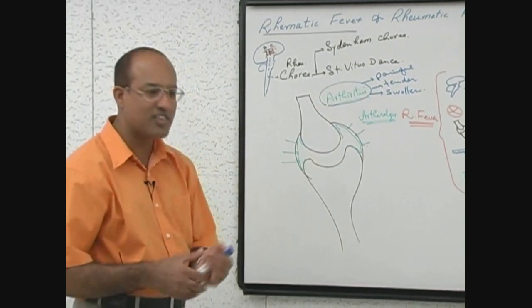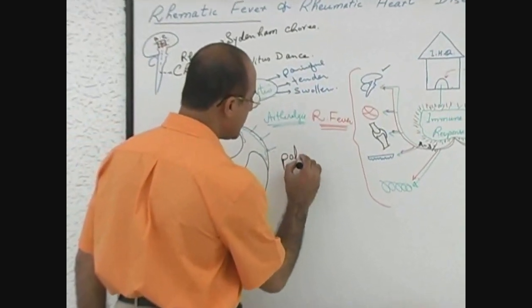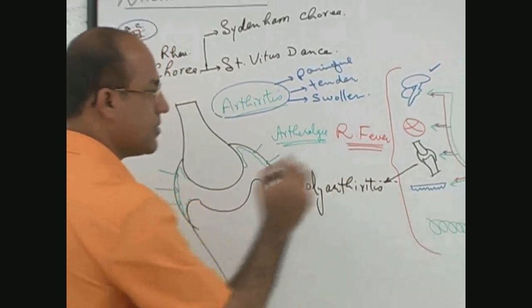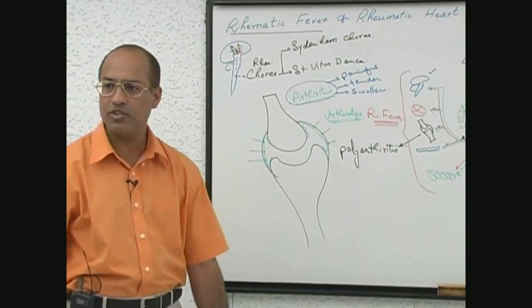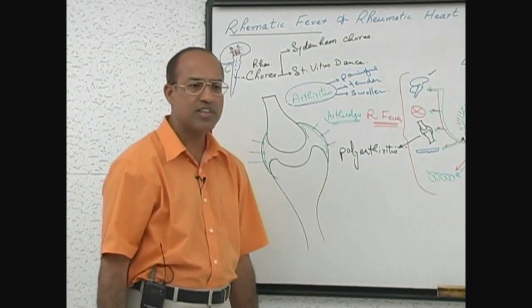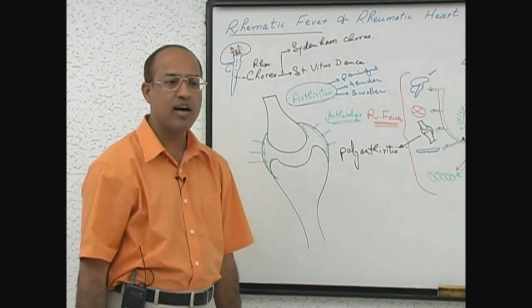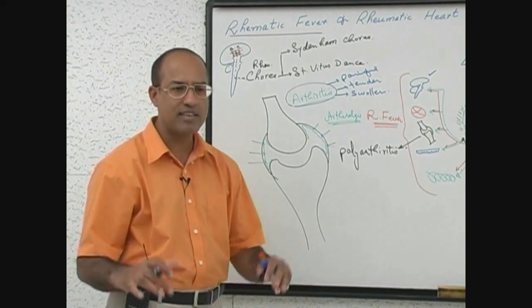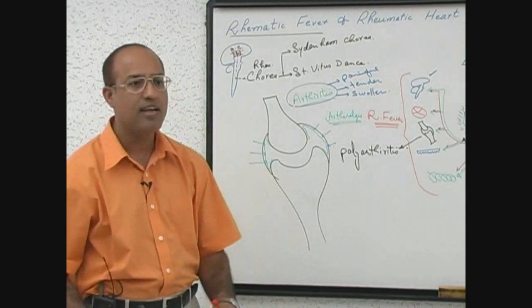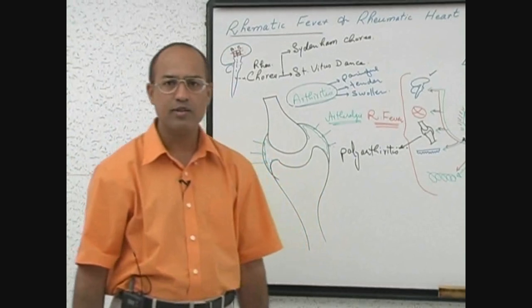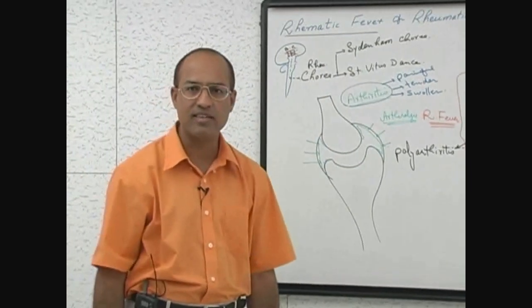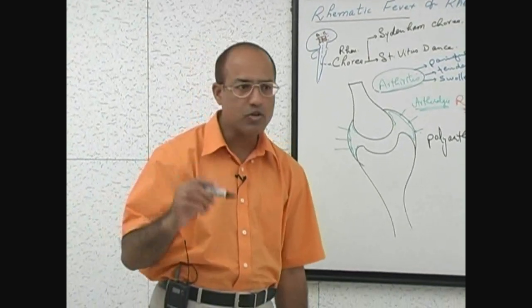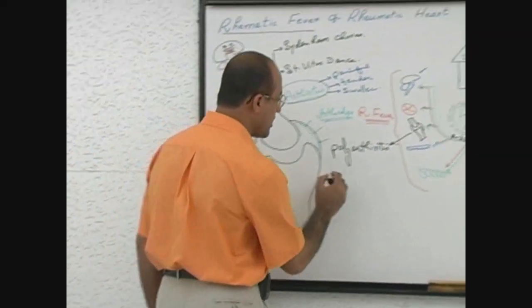These patients classically develop polyarthritis, meaning multiple joints are inflamed. A very special feature of this disease is that for a few days the patient has severe pain in the ankle joint, then the ankle improves and severe pain develops in the knee joints, and then it may shift to another group such as the wrist joints. This is called migratory polyarthritis.